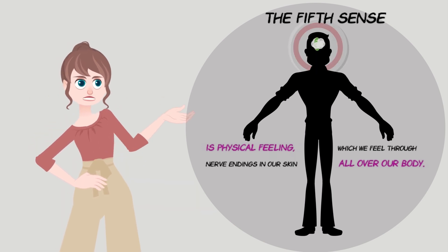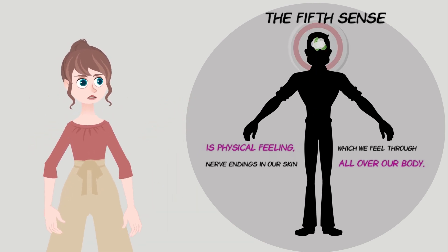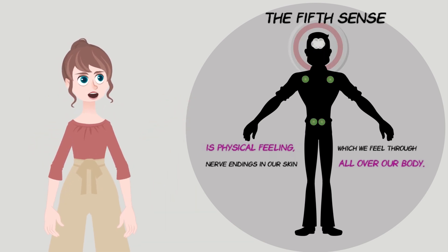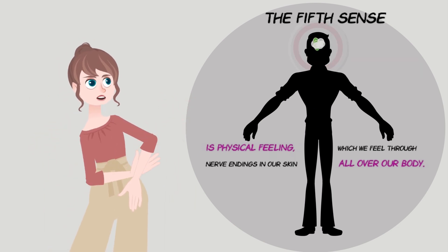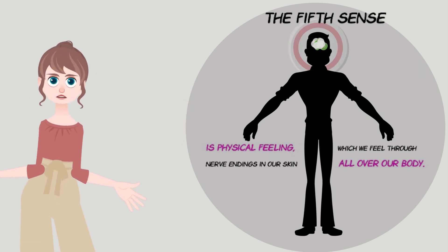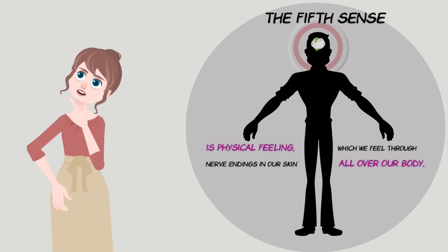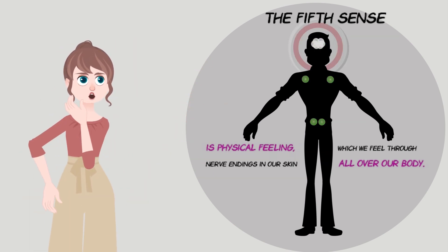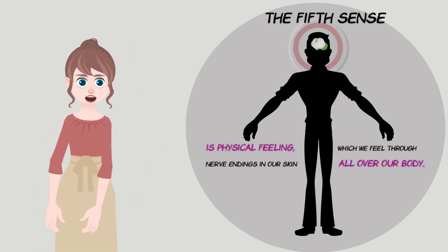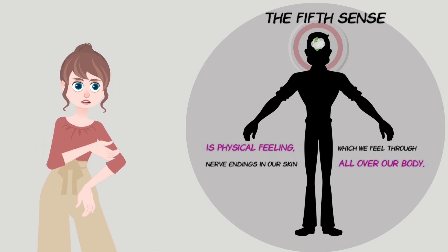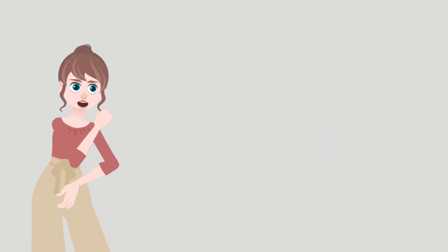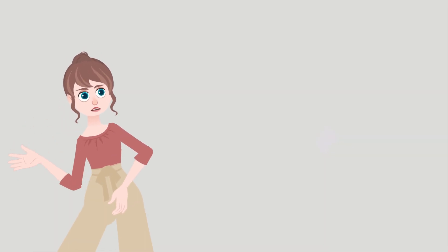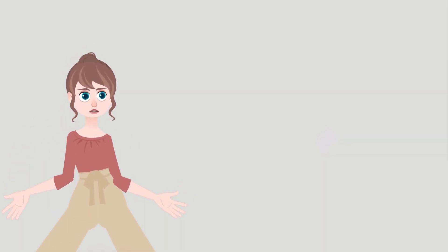All five senses are connected to our brain, and when our senses receive input from our environment, they send that sensing information to the brain to process. In the case of the Vanderwall Effect, visual and auditory information is the focus.